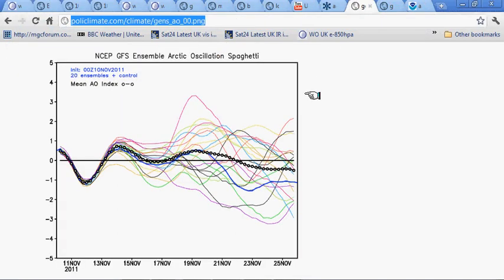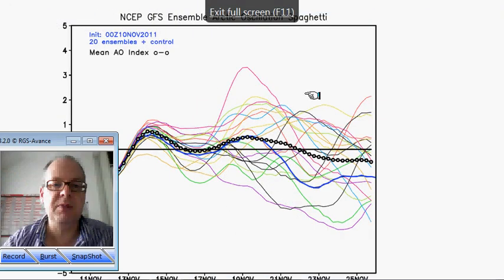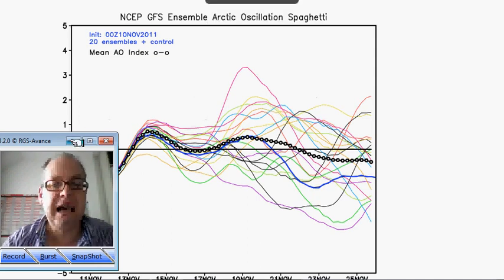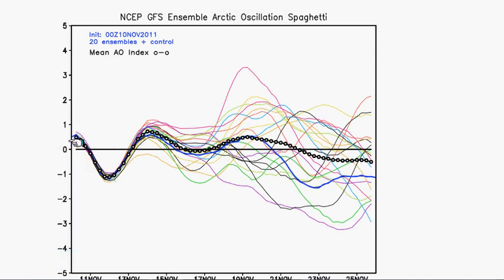This is how the Arctic Oscillation index looks, because you can then produce a forecast based on it. This is the forecast from Ryan Maui's site. What it shows is the dates across the bottom, and it shows how we dip into negative territory, then become more positive next week, and then dip into more negative territory as we go into the end of the month. It's this line with these circles that we're really interested in — the ones either side are basically the various runs of the models.